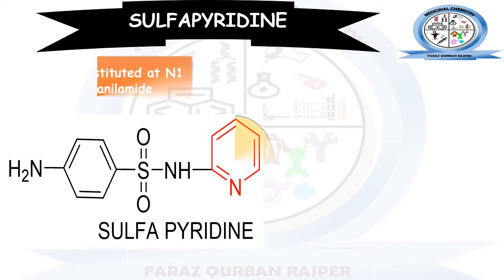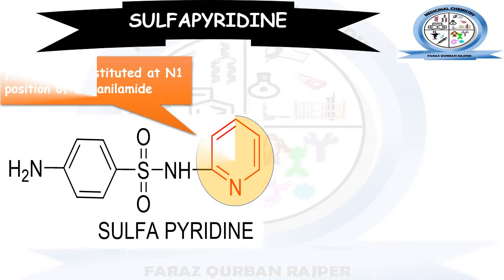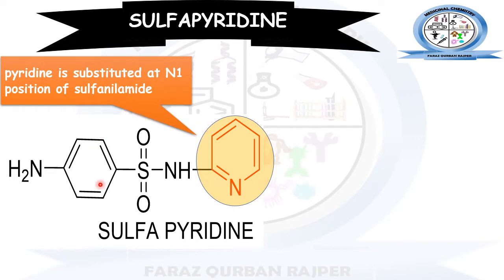Sulfapyridine is the derivative of sulfanilamide that is formed by the substitution of the N1 position with the pyridine ring. In this chemical structure, you may observe that it is similar to sulfanilamide, except the N1 position is replaced with the pyridine ring, in which the heteroatom nitrogen is present.